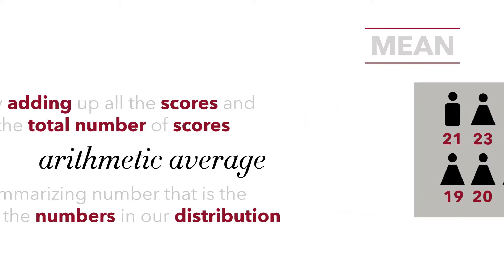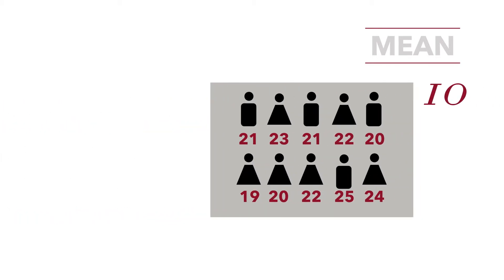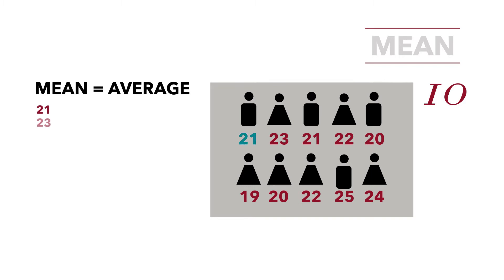We're going to use the data from the previous tutorial that examined the age of students in the statistics class. Here we have the data — ten students represented. We're going to calculate the average. We have ten values, ten ages, and they are 21, 23, 21, 22, 20, 19, 20, 22, 25, and 24.